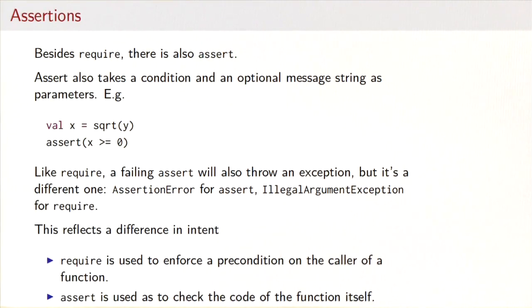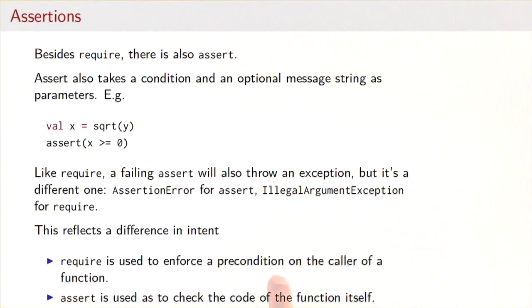Besides require there's also another test which is called assert. Assert takes a condition like require and also an optional message string. So you could use it like this for instance: x equals square root of y and then you assert that x must be greater or equal to zero. Like require, a failing assert will also throw an exception, but it's a different one. Now it will throw an assertion error instead of before an illegal argument exception. That in fact reflects a difference in intent. Require is used to enforce a precondition on the caller of a function or the creator of an object of some class, whereas assert is used to check the code of the function itself.